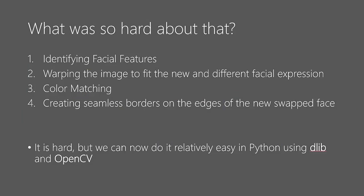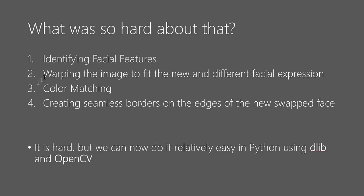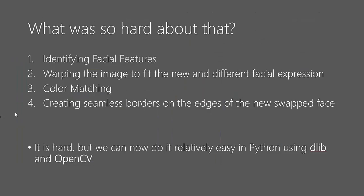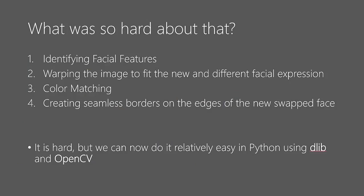Before we install and use dlib, let me reiterate what is hard about doing this face swap. First, we have to identify the facial landmarks. Second, we have to warp the new face onto the existing face. Third, we have to do color matching to make sure the face lighting is correct — which is why Donald Trump's face has a bronzish tint. Finally, we have to create seamless borders at the edges where the face was cut, which looks pretty smooth in the result.